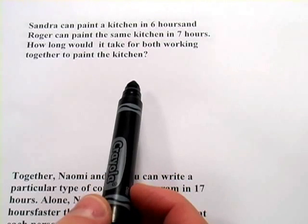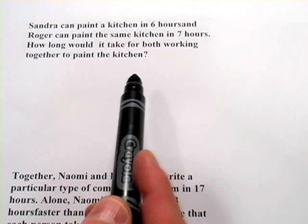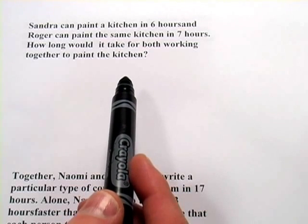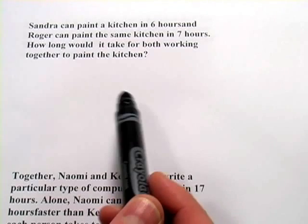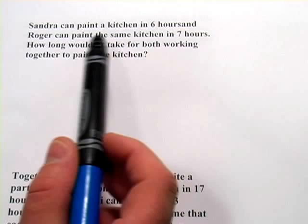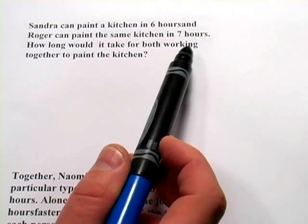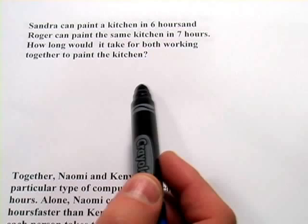One type is this work problem type, where you have a person who does the work in a certain amount of time, another person who does the work in a different amount of time, and you want to figure out how long it takes them to get the job done if they're working together. Sandra can paint a kitchen in six hours. Roger can paint the same kitchen in seven hours. How long does it take when they work together?